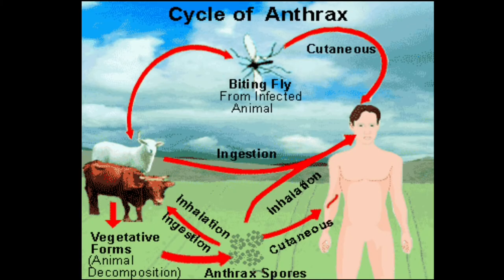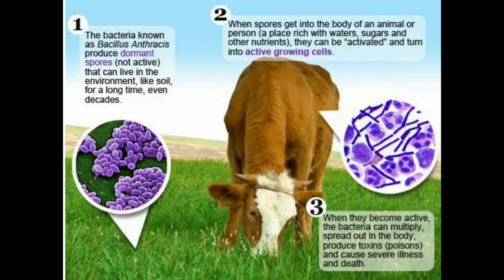Anthrax in humans can affect different body systems depending on the route of infection. It can affect the integumentary system (the skin), the gastrointestinal system, and the respiratory system. When spores get inside the body, they become anthrax bacteria, which can then multiply, spread throughout the body, produce toxins, and cause severe illness.